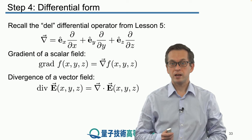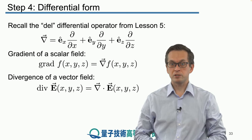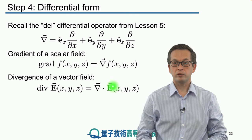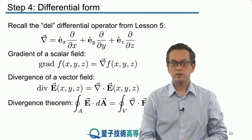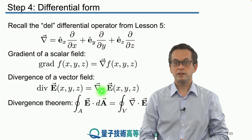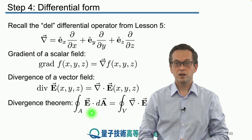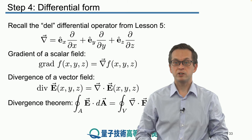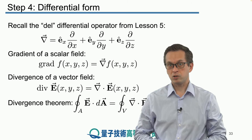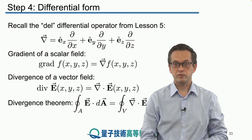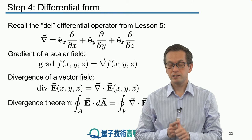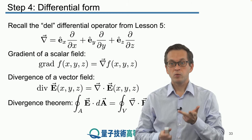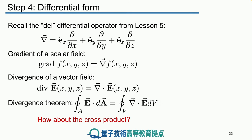We have also seen that we can compute the divergence of a vector field by applying the dot product between the del operator and the vector field itself. This led to the divergence theorem that related the surface integral of a vector field to the divergence of the field inside an enclosed volume V, enclosed by the surface A. So we have seen two operations: multiplication by a scalar, and the dot product with another vector. We are still missing the third possible product between two vectors, and that's the cross product — and that's exactly what we're going to do in this step.